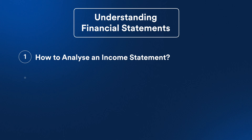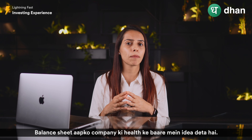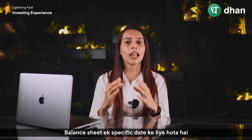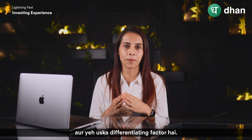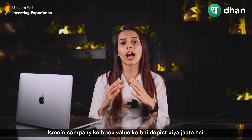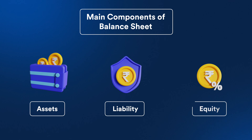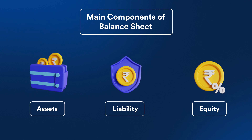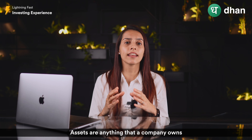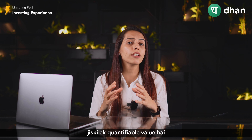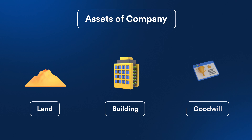So now, the next question is how to analyze a balance sheet. Balance sheet आपको company की health के बारे में idea देता है. Balance sheet एक specific date के लिए होता है और ये उसका differentiating factor है. इसमें company की book value को भी depict किया जाता है. Assets, liabilities और equity balance sheet के main components हैं. Assets are anything that a company owns जिसके एक quantifiable value है — for example, land, building, goodwill, etc.